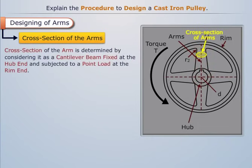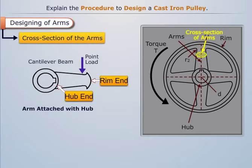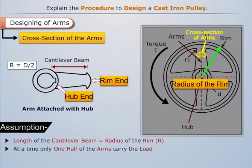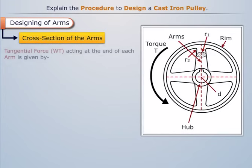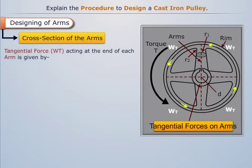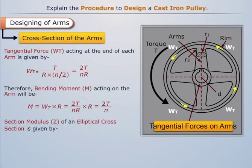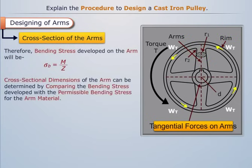The cross-section of the arm is determined by considering it as a cantilever beam fixed at the hub end and subjected to a point load at the rim end. The length of this cantilever beam is assumed equal to the radius of the rim, and it is assumed that at a time only one half of the arms carry the load. The tangential force acting at the end of each arm gives the bending moment on the arm. The section modulus of the elliptical cross-section is used to find the bending stress, and cross-sectional dimensions are determined by comparing the bending stress with the permissible bending stress for the arm material.